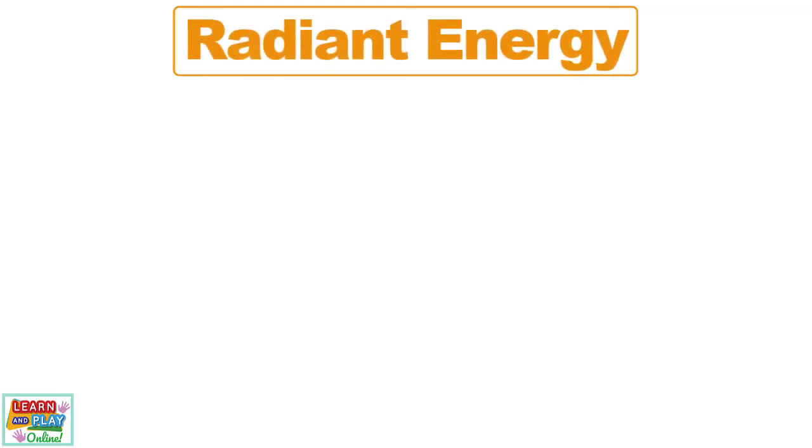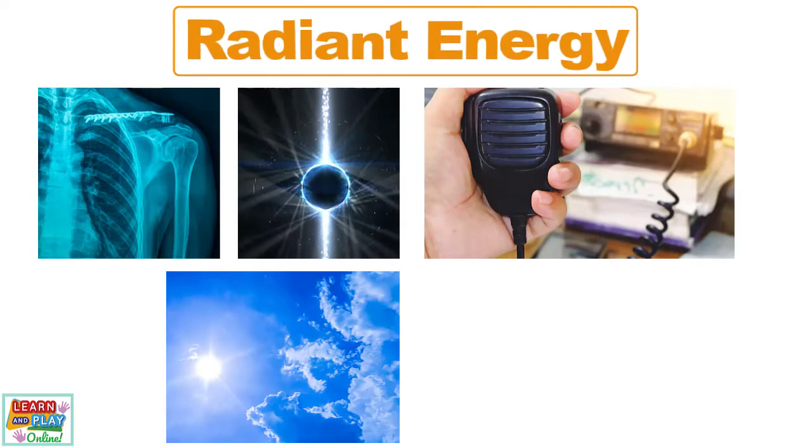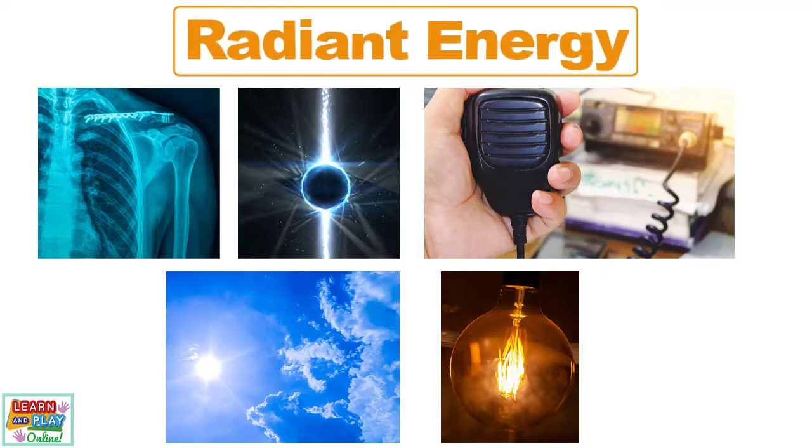There are different types of radiant energy including x-rays, gamma rays, radio waves, sunshine, and light. Light energy is the only form of radiant energy that is visible to the human eye.